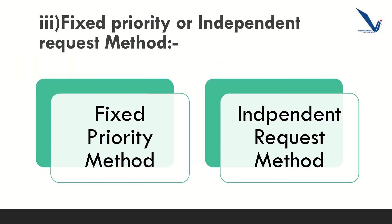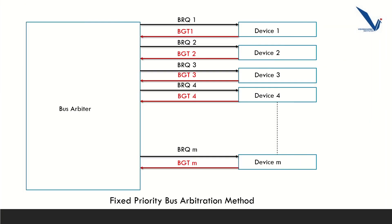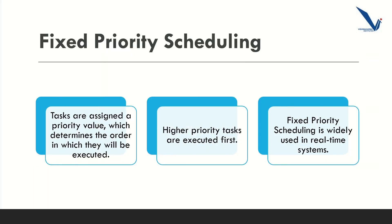Fixed priority scheduling is a scheduling method used in real-time systems where tasks have strict deadlines. Each task is assigned a priority value based on its importance. The task with the highest priority is executed first and execution continues until all tasks are completed. This method ensures that high-priority tasks are executed within their deadline and that the system meets the required response time. One of the key benefits of fixed priority scheduling is that it provides predictable performance. The system can be designed and analyzed using mathematical models. Fixed priority scheduling is widely used in aerospace, medical, and industrial control systems. However, one of the main disadvantages is that lower priority tasks may experience starvation if high-priority tasks keep arriving, preventing low-priority tasks from executing.